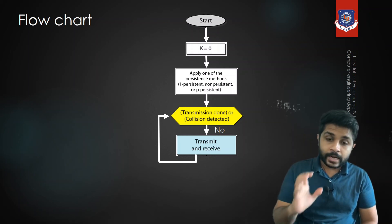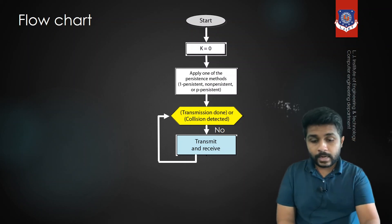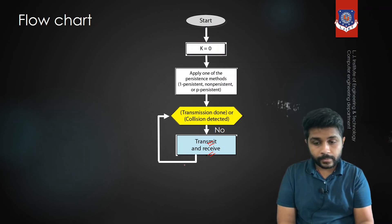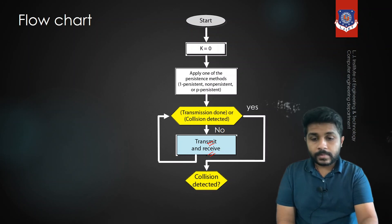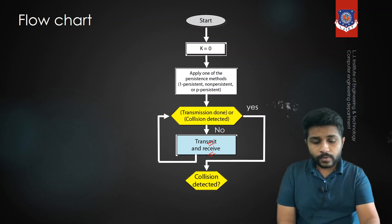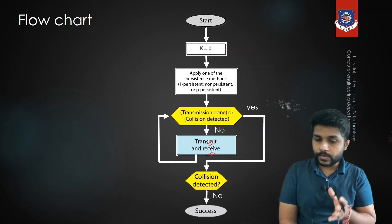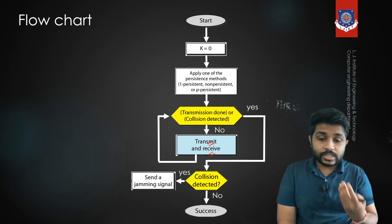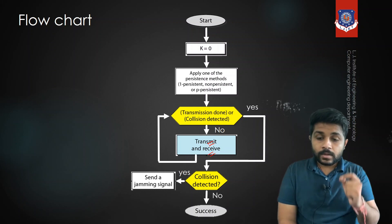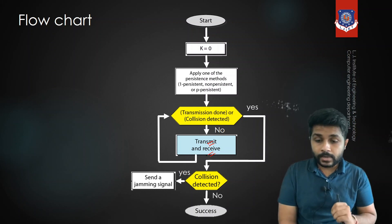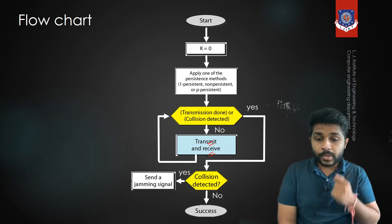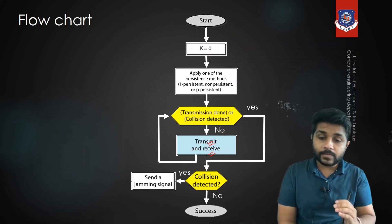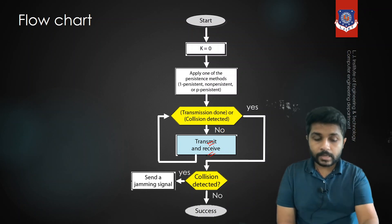If the sender detects a collision during transmission, it stops sending data and prepares for retransmission. If no collision is detected, the transmission is successful. When a collision is detected, the sender transmits a jamming signal to inform every device on the network that there is a collision and they should wait before sending data.